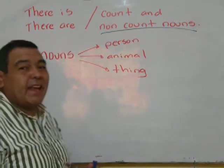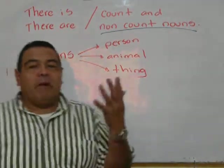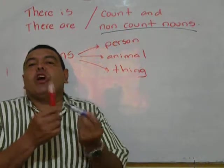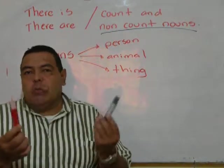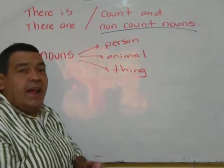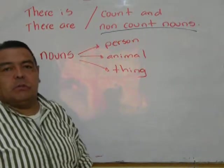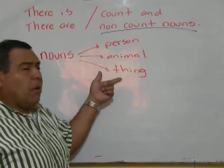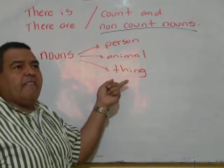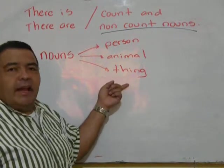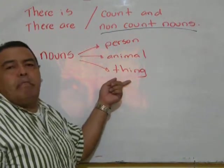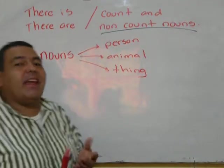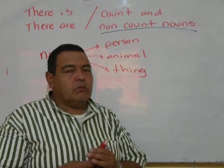We're going to talk about nouns that can be counted. For example, my fingers: one, two, three, four, five. My markers: one, two markers — those are count nouns. An elephant, an octopus, a giraffe — talking about animals. Talking about things: a car, five cars, ten houses, eleven trees, one billion people. Everything that can be counted are count nouns.